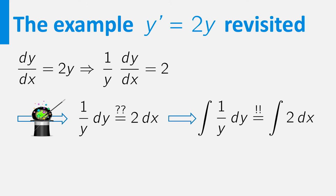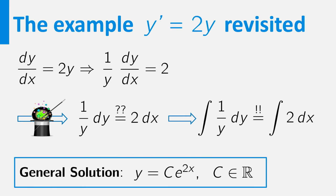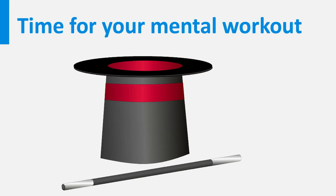The remaining steps to the general solution, y equals c times e to the 2x, which is the same as before, I leave to you. Please do, enough for today, goodbye.